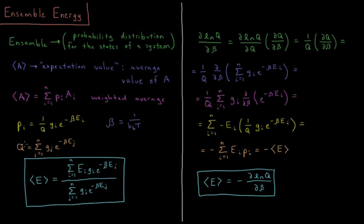The partition function q is the sum over all energy levels from j equals 1 to n of the degeneracy of that level times its Boltzmann factor, e to the minus beta e_j. If we substitute in the expression for the probability and the partition function, the average value of the energy is the weighted average — a sum over all levels of the energy of that level times its relative probability, which is degeneracy times Boltzmann factor, divided by the sum over all states of degeneracy times Boltzmann factor.